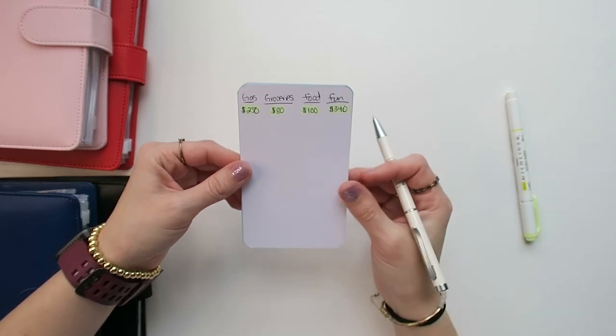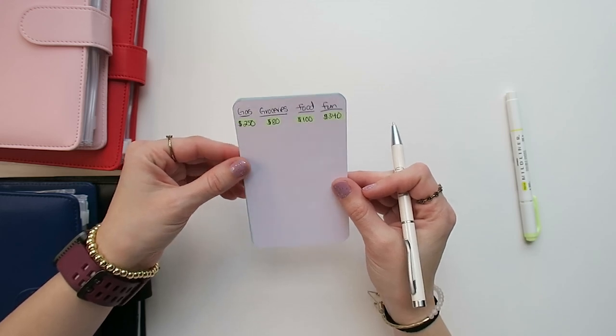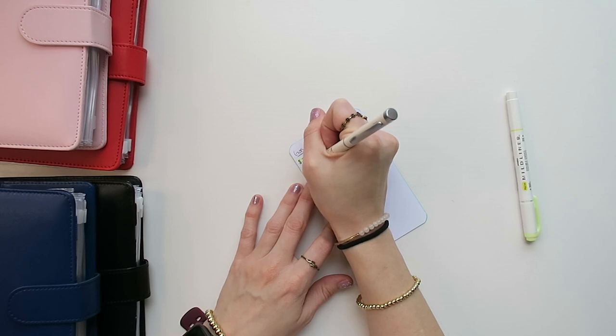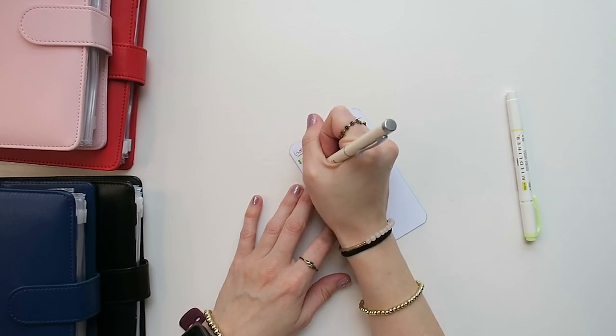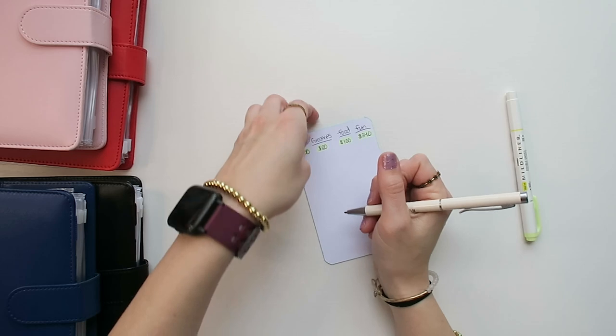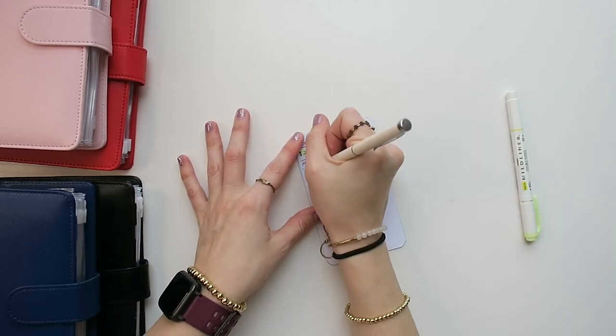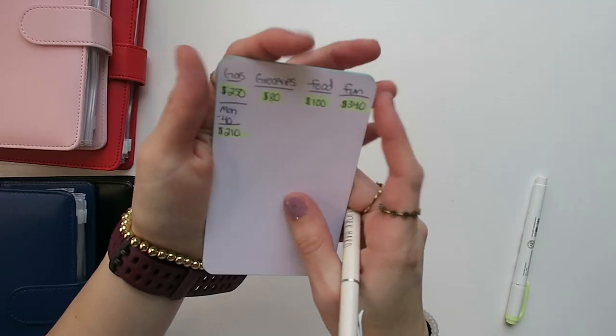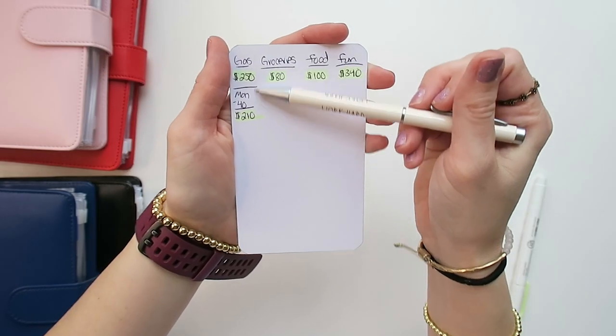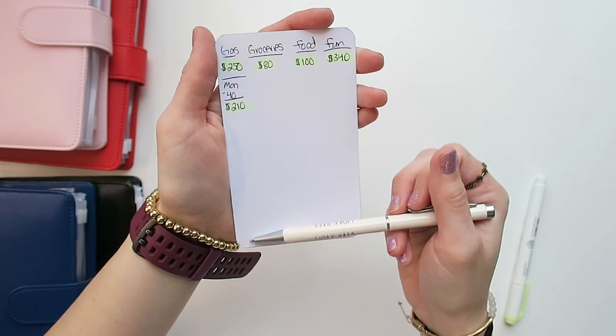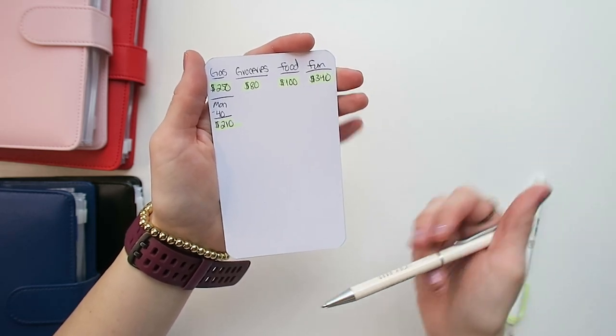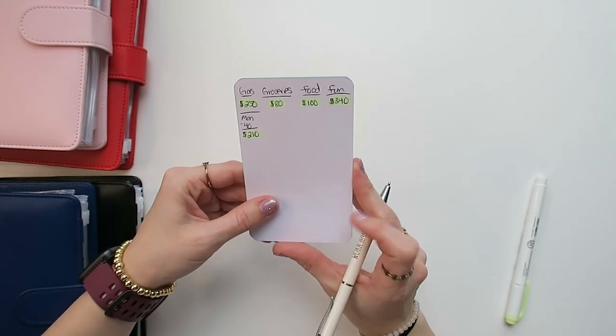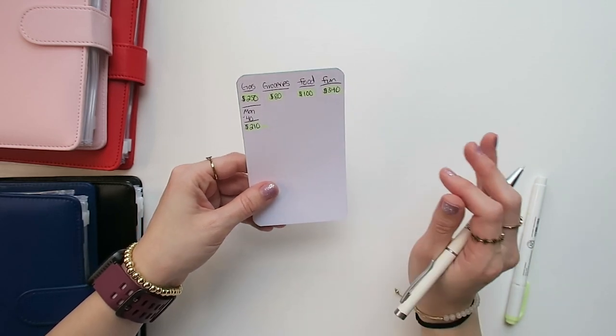I put this on an index card so that I can easily put it in my purse, put it in my wallet, and carry this around. How I would use this once I'm actually out - let's say on my trip on Monday I get $40 worth of gas, I would write Monday negative $40 and then I have $210 left. So I would just keep a tally going down the gas column. Same for groceries, food, and fun. This is how I would do things if I were doing a cashless system.